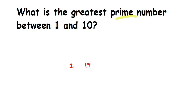First, we have to write down the prime numbers between 1 and 10. Once we have written them, we are going to find the greatest out of all those numbers — whichever is the greatest will be the greatest prime number. Now let's check from 1 to 10. So 1 is neither a prime number nor a composite number, so we should not consider it.